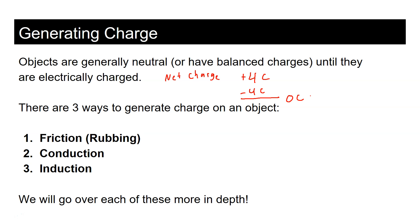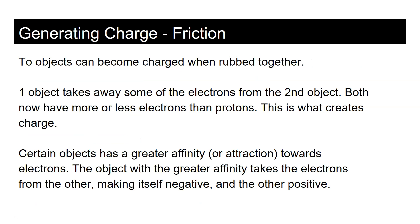The biggest method we'll discuss for static electricity is friction — rubbing things together. When two objects are rubbed together, one object takes away some electrons from the second object. Both now have more or fewer electrons than protons, which creates a charge. The thing that changes when rubbing objects is the number of electrons.